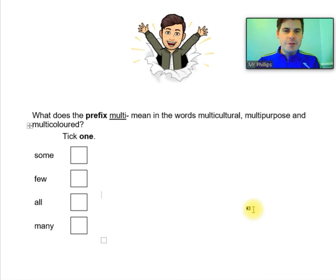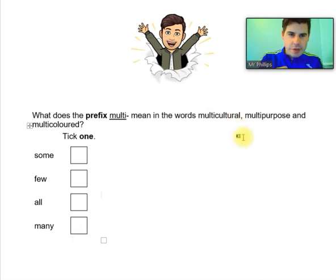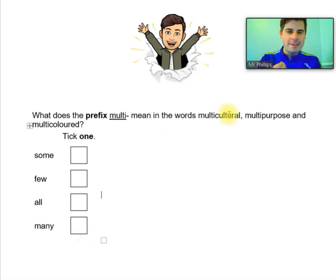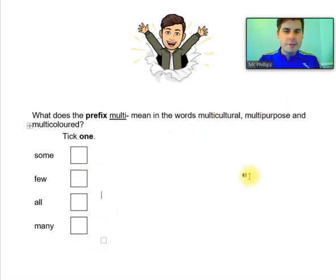If you've got that, well done. It's always worth finding the root word and then substituting: many cultures, many purposes, many colours. That's always the best way to have a little look at prefixes.